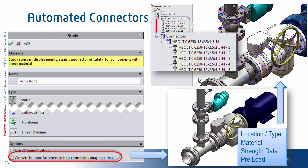Another great automation tool is the ability to automatically convert toolbox fasteners to bolt connectors in SOLIDWORKS Simulation. The location, type of bolt, material, strength data, and preload values are automatically mapped from the fastener definition in SOLIDWORKS to the corresponding bolt connector in SOLIDWORKS Simulation. To do this, all that's required is to check the box 'Convert toolbox fasteners to bolt connectors,' and the program takes over and does the rest.